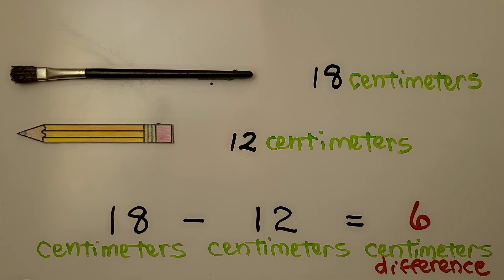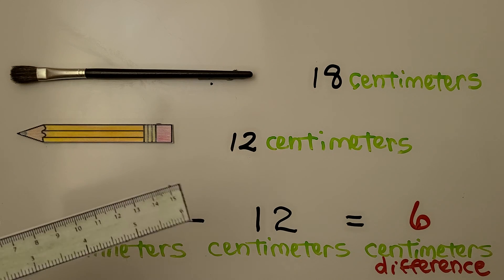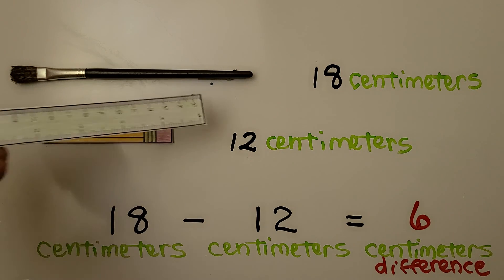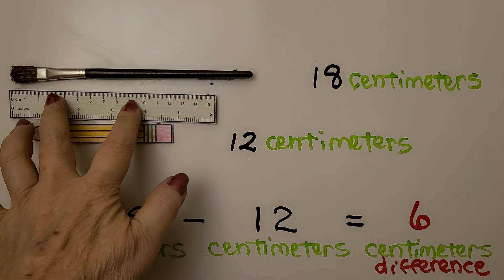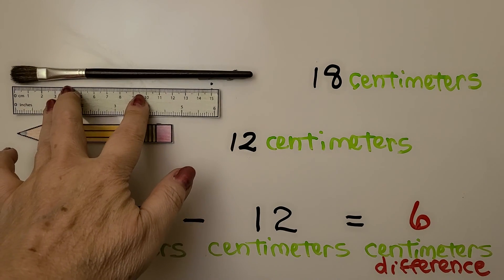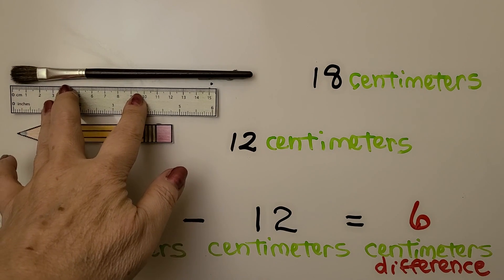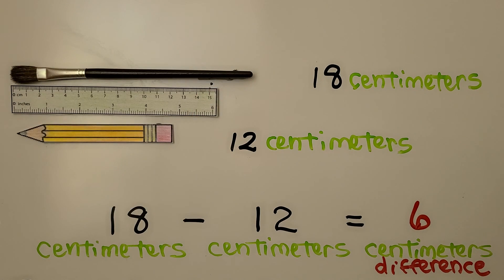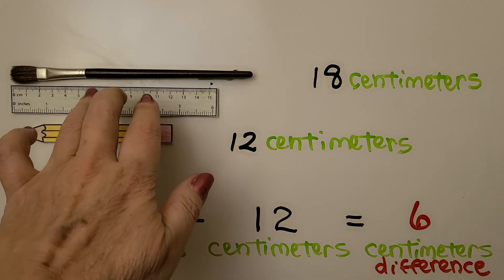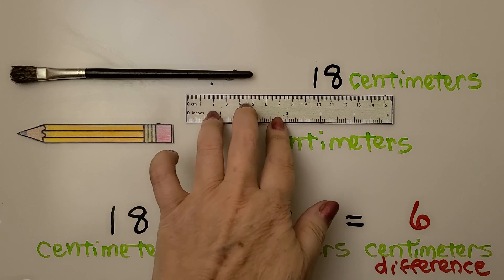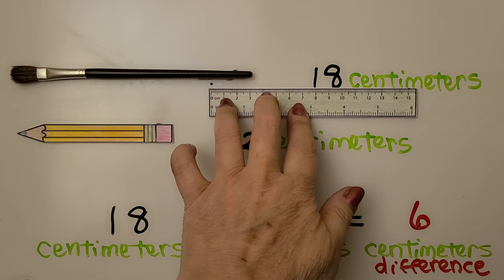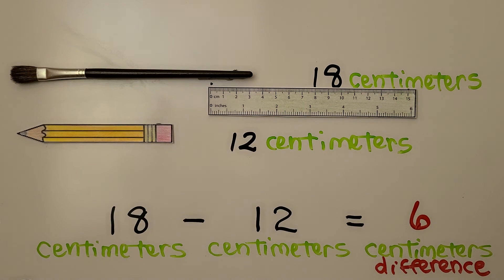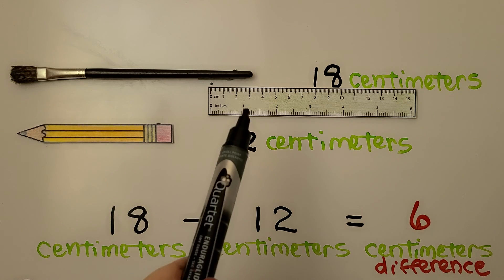To compare the length of the paintbrush and the drawing of the pencil, we take our centimeter ruler — mine goes up to 15 centimeters, so we might have to use it more than once. We line up the zero mark on the left side of the paintbrush and put a little dot at 15 centimeters. We slide the ruler over, line up the zero mark with our little 15-centimeter mark, and we can see there are 3 more centimeters.